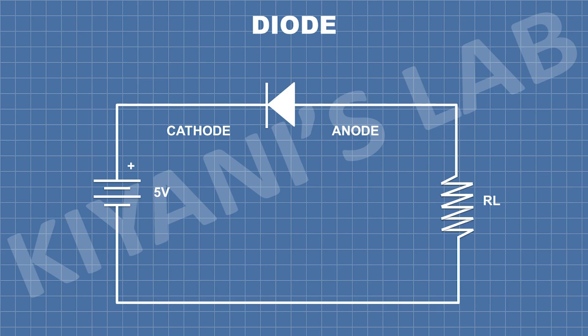And if we connect the positive terminal of the battery to the cathode of the diode and the negative terminal of the battery to the anode of the diode, the diode becomes reverse biased and no current flows through the diode.